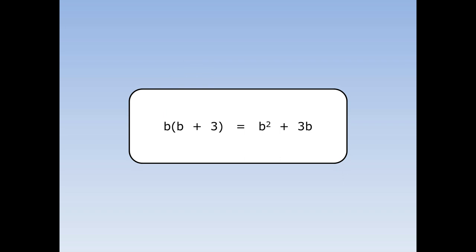When we multiply out b bracket b plus 3, the answer is b squared plus 3b.